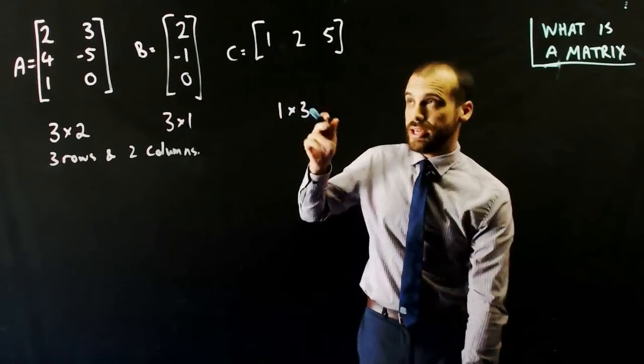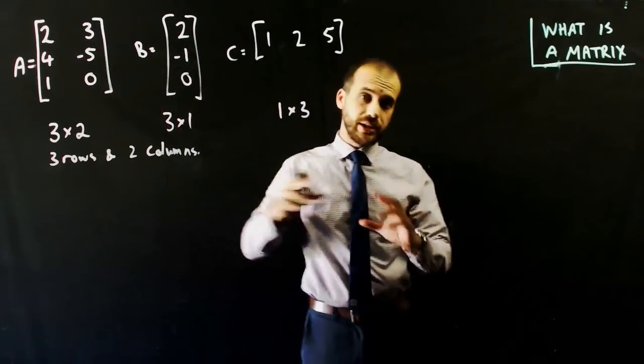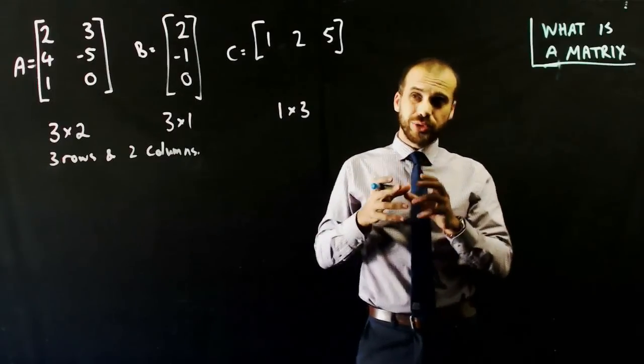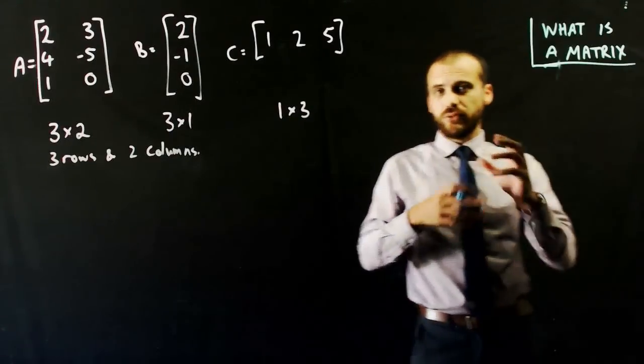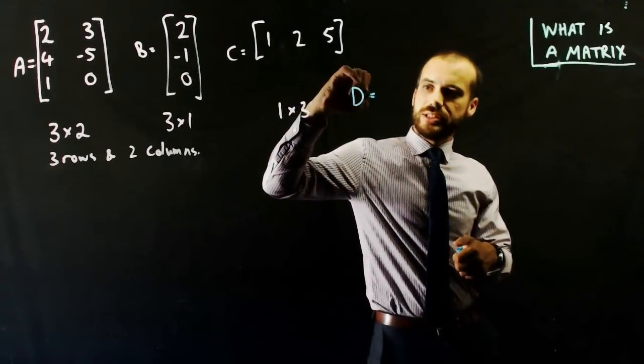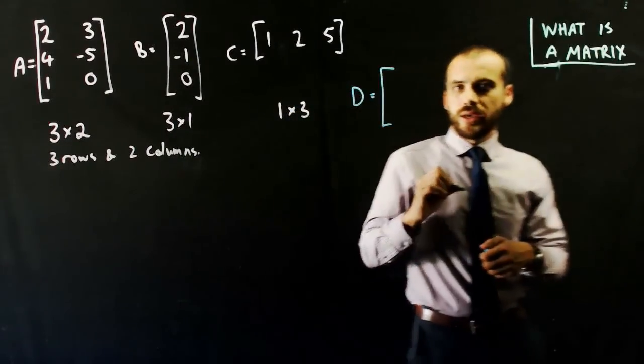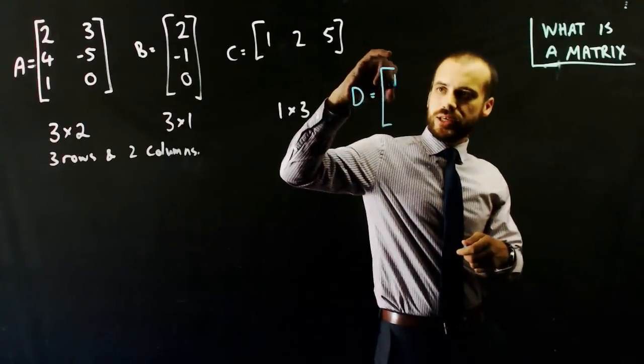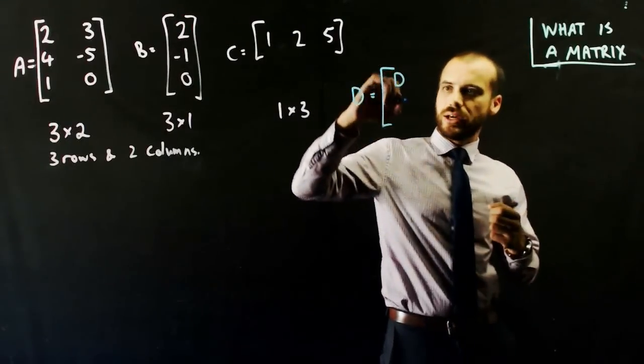So in a matrix, each individual number inside of the matrix is called an element. So if we're going to do this more generally, we can say that here's matrix D. And this is element 1, 1 of D.